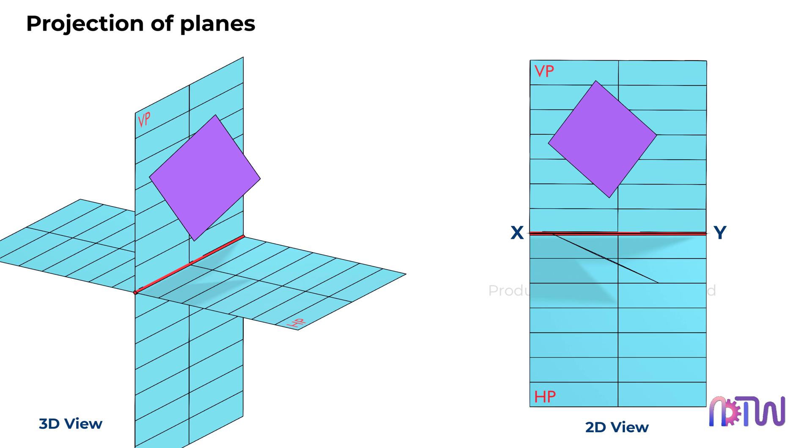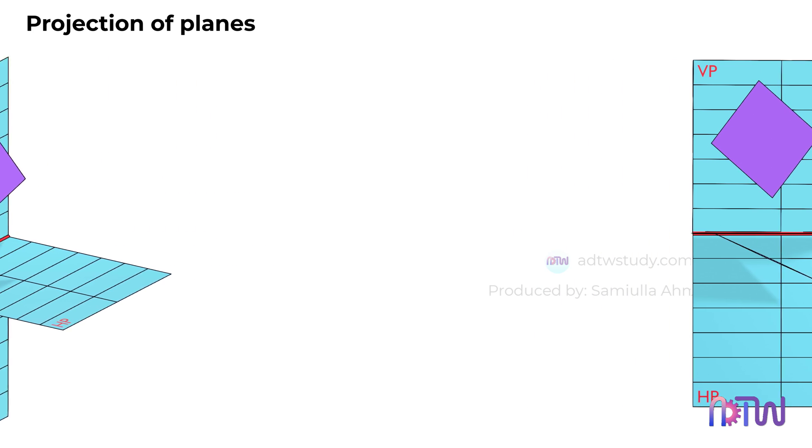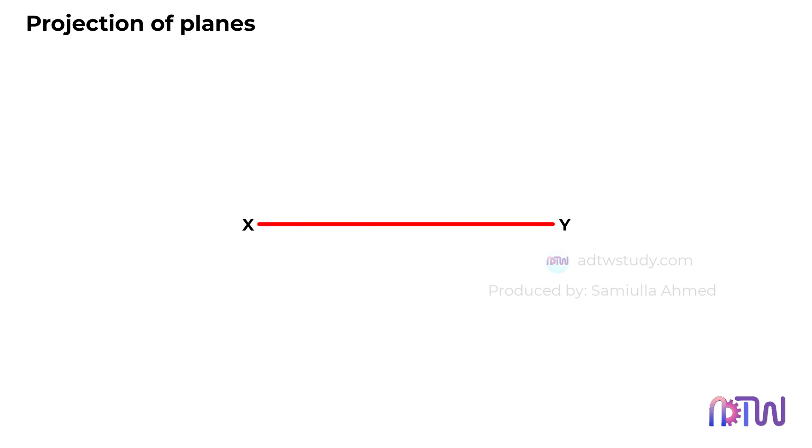When drawing the projection of planes in 2D representation, it's crucial to focus on the orientation of the planes relative to the reference lines. Here, we'll use the reference line XY to guide us. There are several key points to remember.